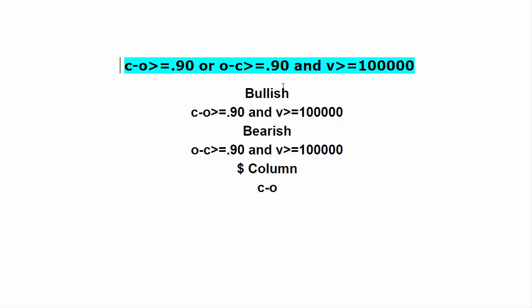If you want two separate scans you can create a bullish one: C minus O is greater than ninety cents — so if the close is one hundred and the open was ninety-five, the stock is up five points and that satisfies your condition. Similarly, O minus C greater than ninety means the open was one hundred and the close is now ninety-five, so the stock is down five dollars — that will also satisfy your condition.